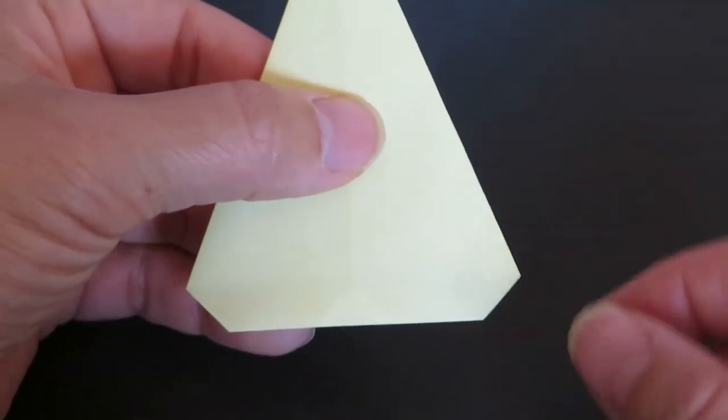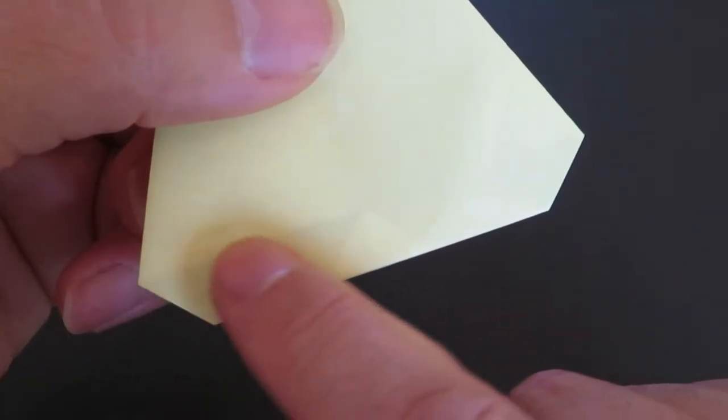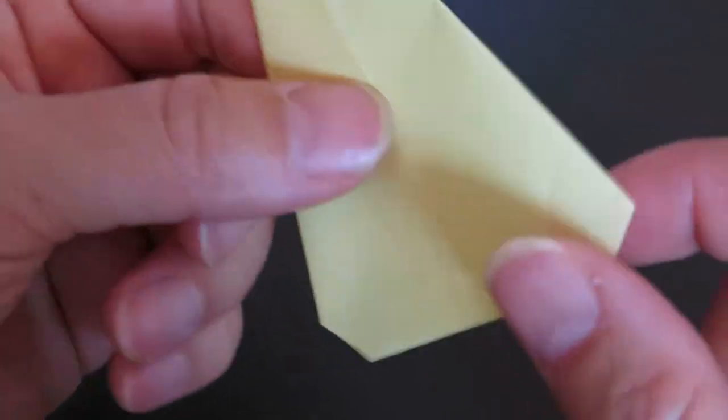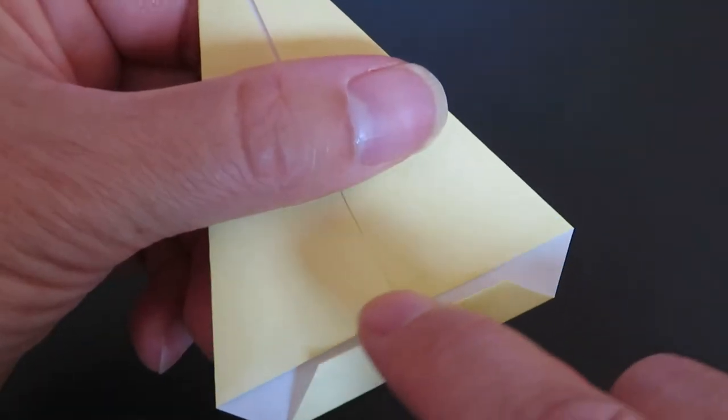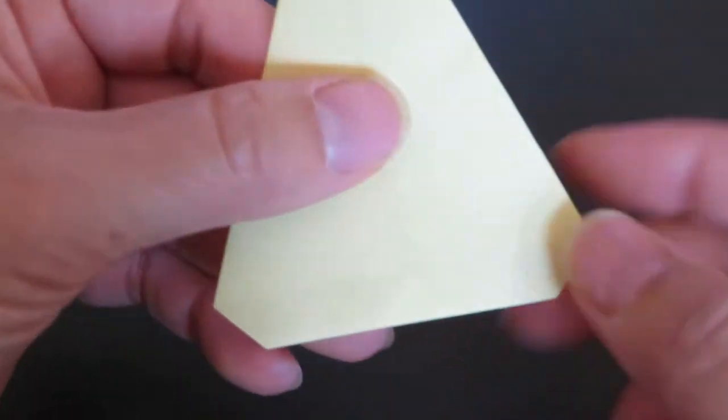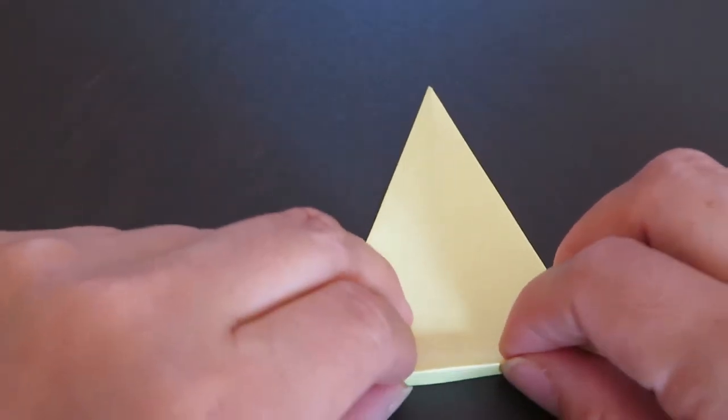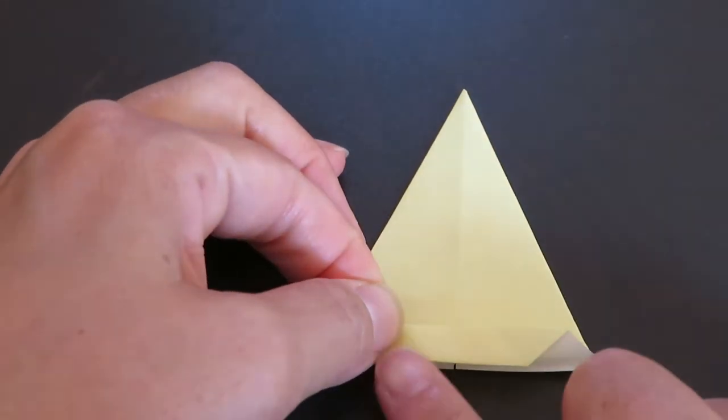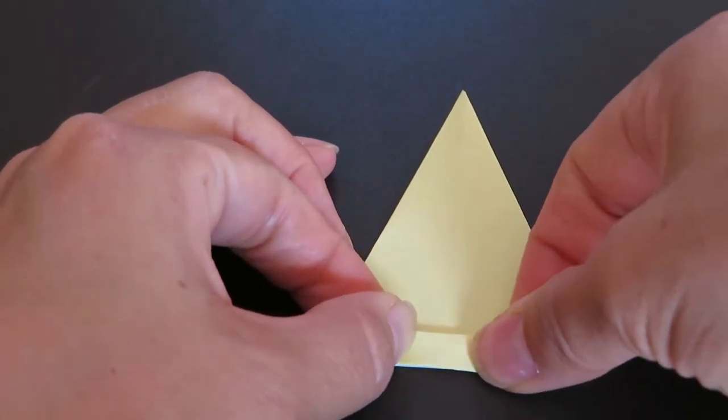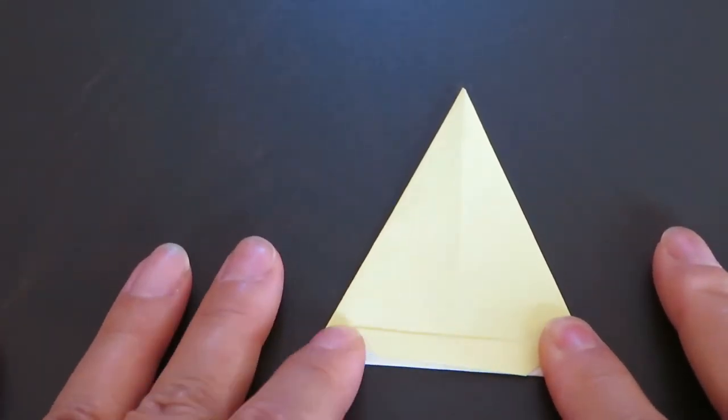And flip over. Can you see slightly this line here? It's this line on the back. But now we are going to fold this piece, the bottom piece up by the line. So just make sure you fold the bottom of this yellow part, like this.